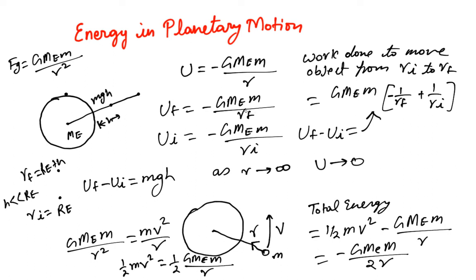The potential energy of an object at rest at distance r from the center of the earth is -GMe*m/r, and the total energy of an object in orbit of radius r is -GMe*m/(2r). The orbital energy is a smaller negative, while the resting potential energy is a bigger negative, so the orbital energy is greater.